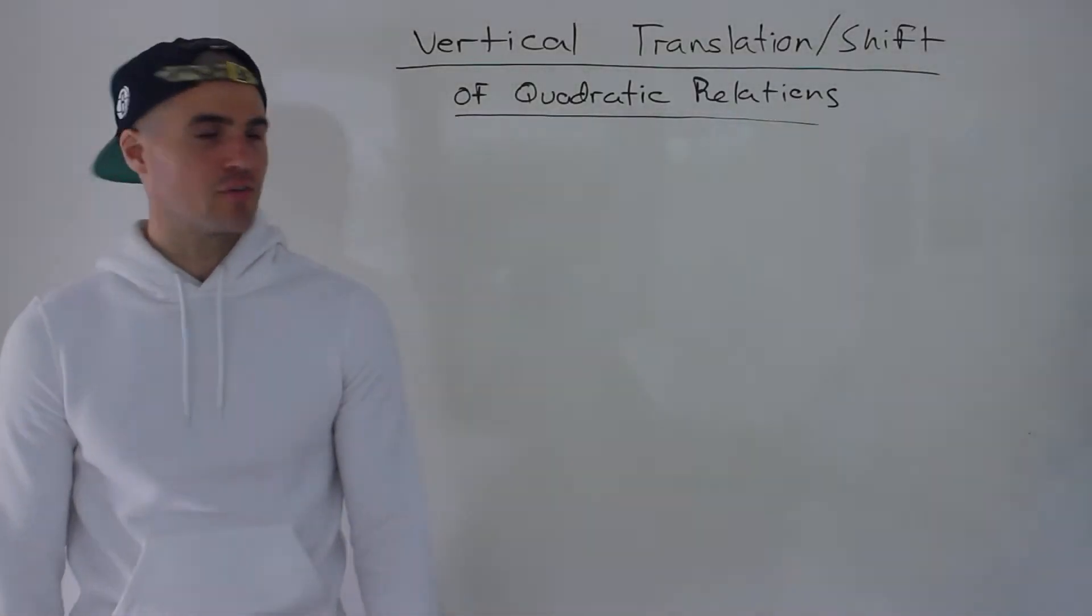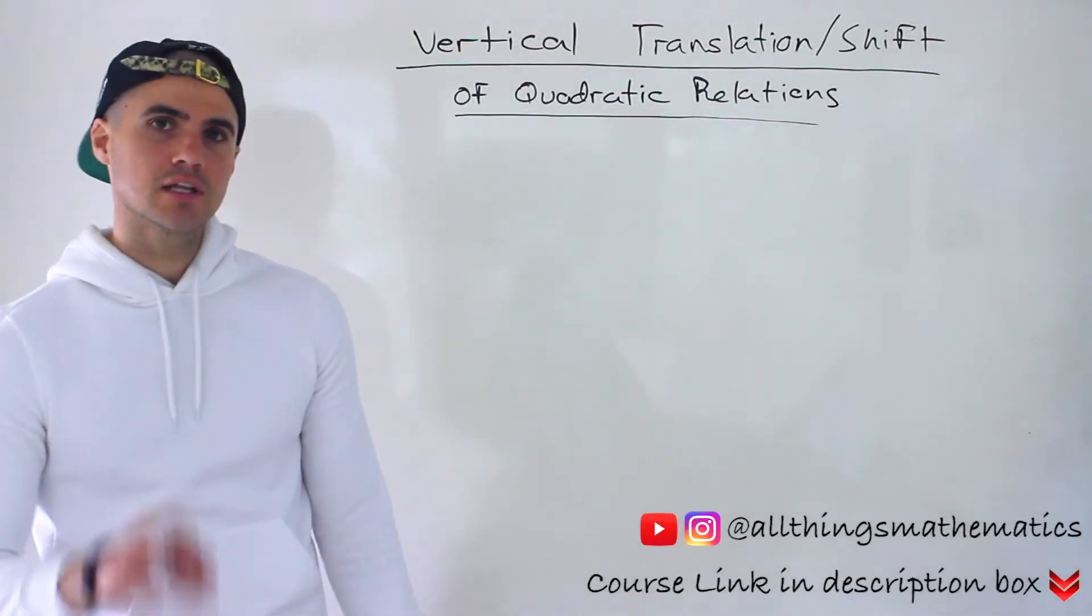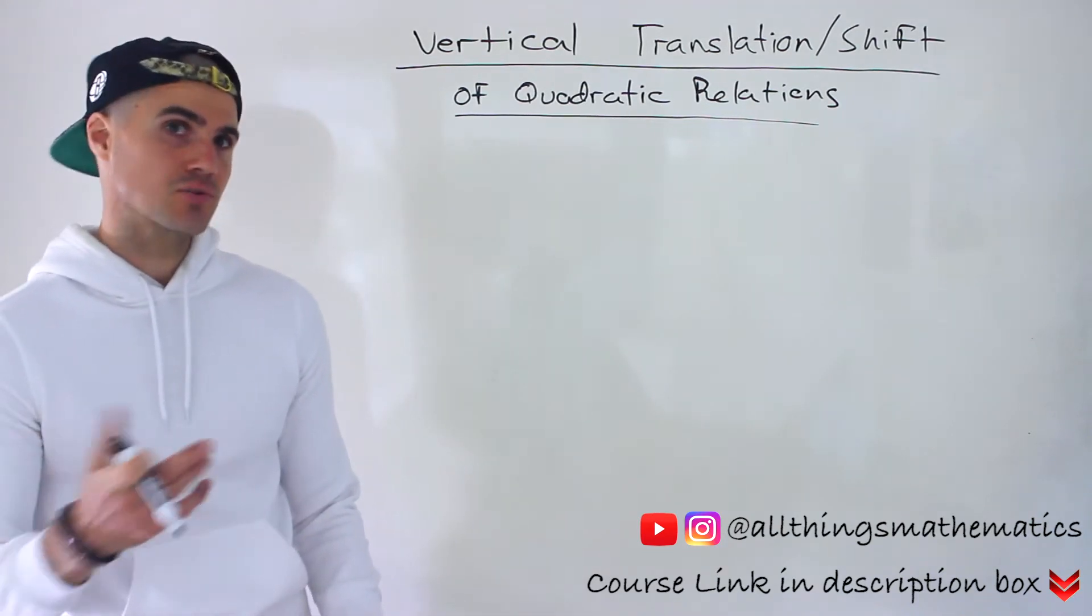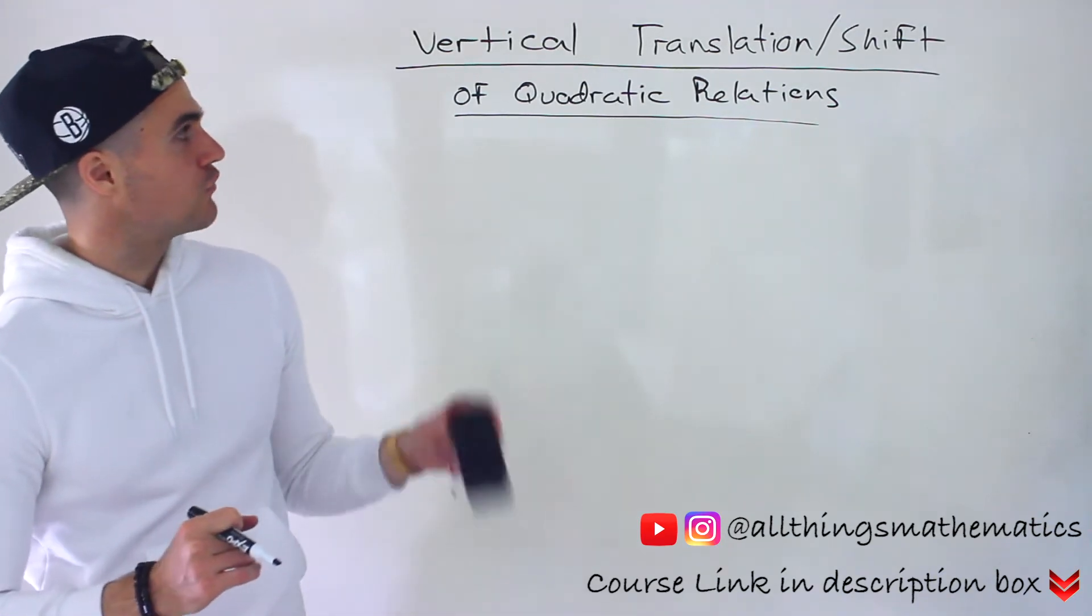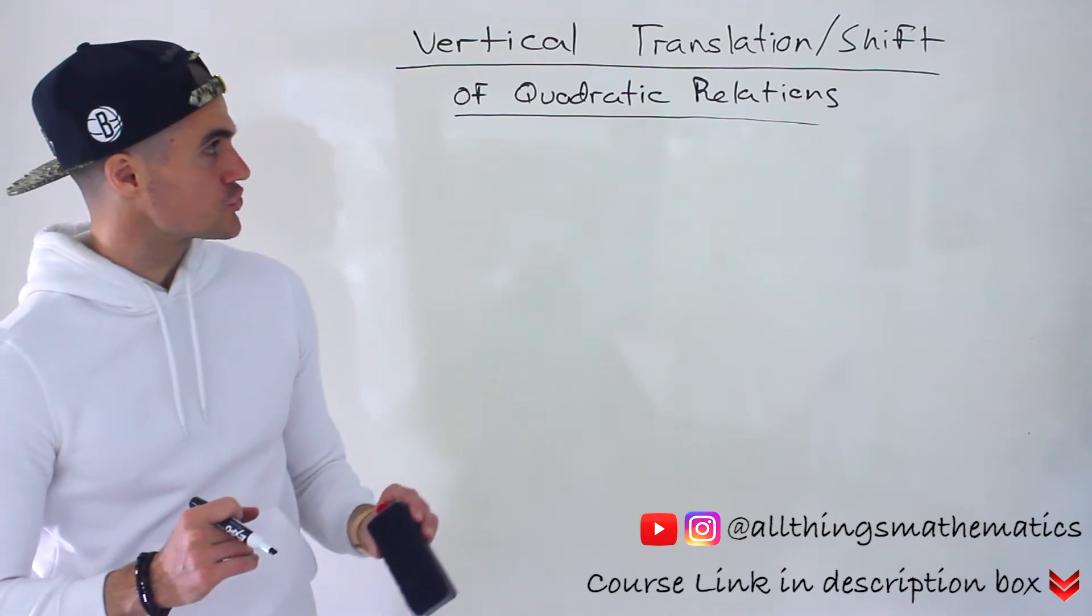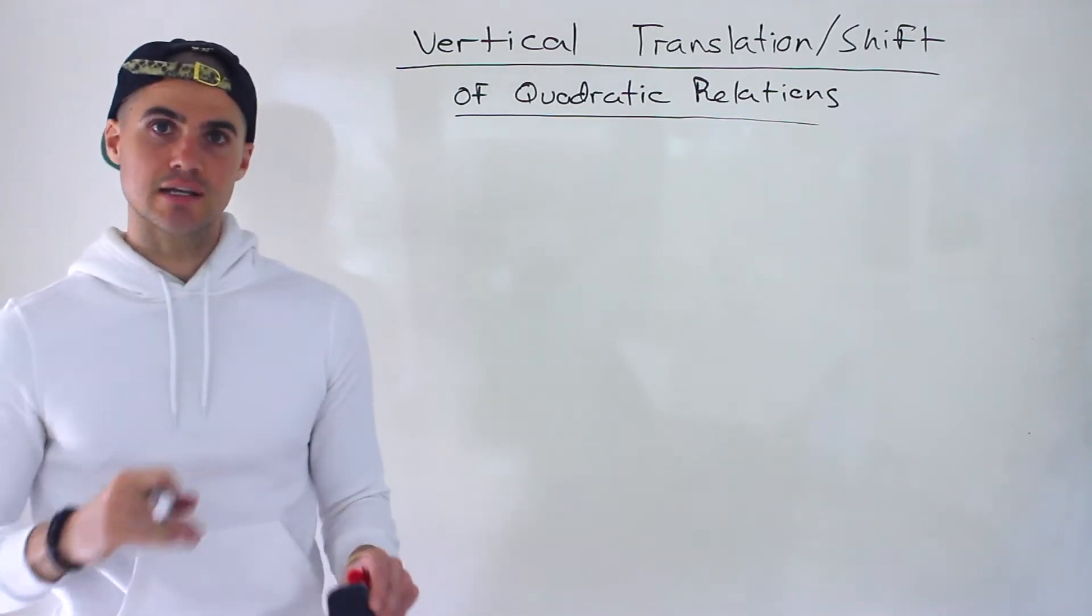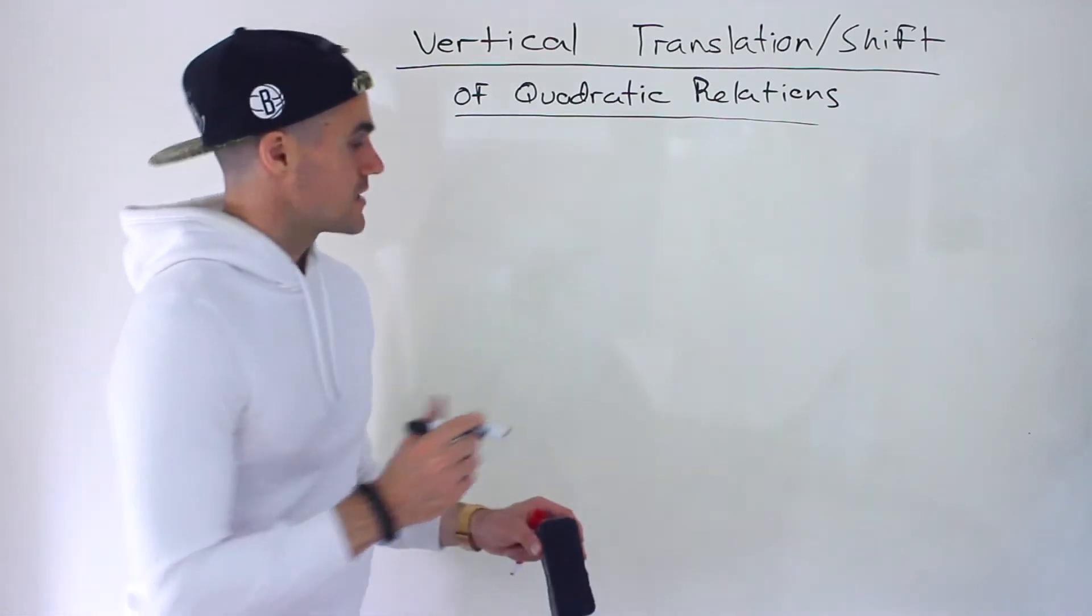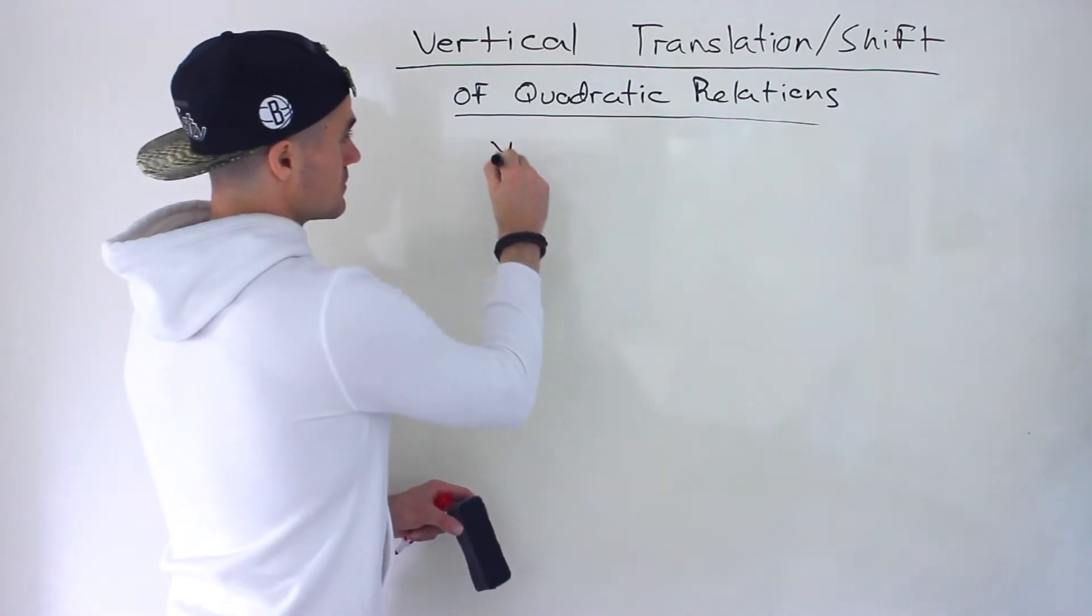Welcome back everyone, Patrick here. Moving on to the next video dealing with quadratic relations and their transformations. The next transformation we're going to talk about is a vertical translation or shift, meaning it's translated or shifted up and down from that base function y equals x squared.